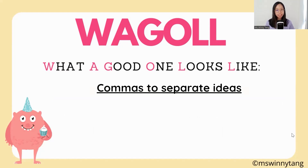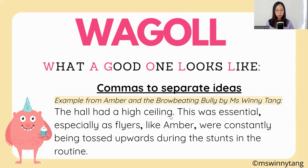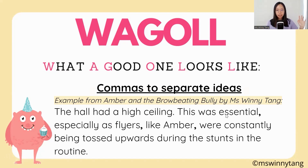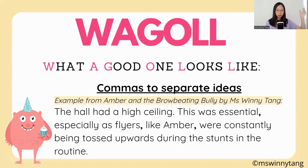Commas to separate ideas: 'The hall had a high ceiling. This was essential, especially as flyers, like Amber, were constantly being tossed upwards during the stunts in the routine.' We're separating different ideas here — the hall had a high ceiling as its own sentence, and then the next sentence explains why it's essential, because flyers like Amber — the people being thrown up in the air and caught again — need that space.